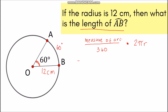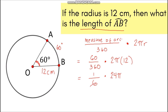Now let's substitute this into the formula. So you have 60 over 360, multiplied by 2π, and the radius r is 12 cm. Simplifying this, it becomes 1 over 6, multiplied by 24π. Simplifying further, we can simplify 6 and 24, therefore the length of arc AB is 4π.